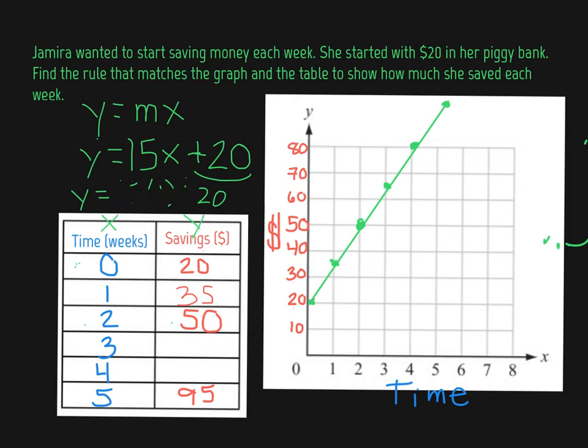Let's plug in our next one. Now we're going to do 3. 15 times 3 plus 20. That's 45 plus 20 would be 65.